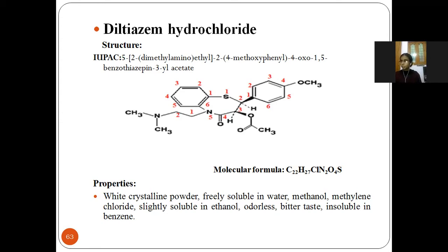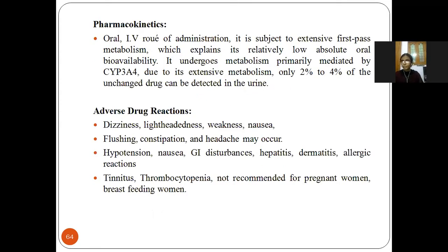Properties of diltiazem: white crystalline powder, freely soluble in water, methanol, and methylene chloride, slightly soluble in ethanol, odorless with bitter taste, insoluble in benzene. Pharmacokinetics: oral and intravenous routes of administration; undergoes first-pass metabolism; oral route has low bioavailability compared to intravenous; metabolized through cytochrome enzyme; eliminated through urine.